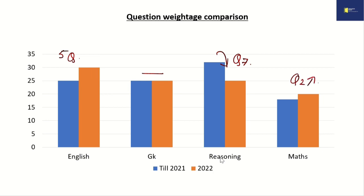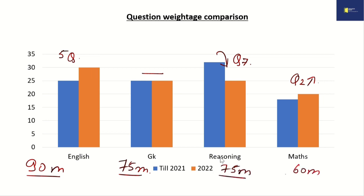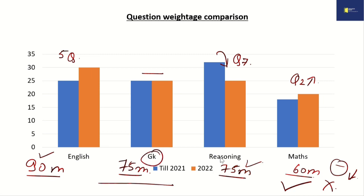Now let us see how many marks we can fetch from each section. We can fetch 90 marks from English, 75 marks from GK, 75 marks again from reasoning, and 60 marks from maths. In maths, negative marking is very less because either we know the answer or we do not. English and reasoning also give good marks, but GK is a vast subject — we don't know what all to study, so we'll discuss that here.